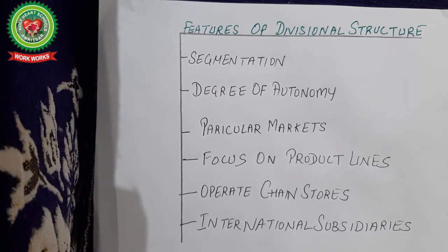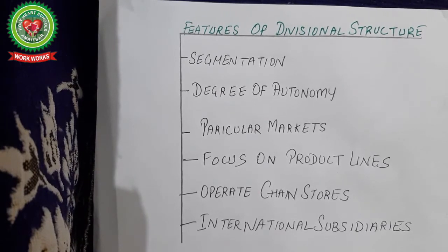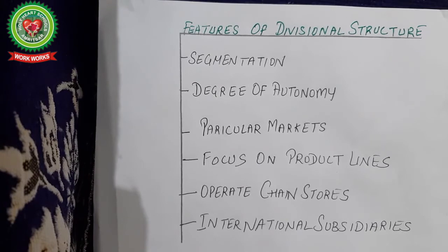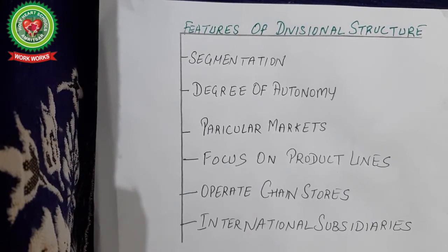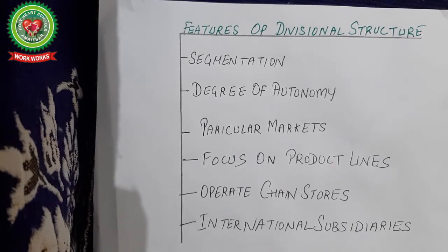Divisions focus on product lines. For example, in garments they may deal in readymade garments — men's products, women's products, and kids' products — so different product lines under one division. In divisional structure there are also operated chain stores, as in the example of Bata — chain stores opened in different localities under one brand name and capital. They also have international subsidiaries, so generally MNCs follow divisional structures, like McDonald's, Domino's, and KFC.